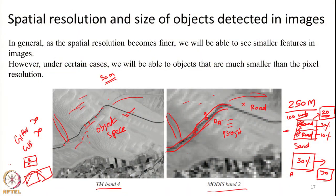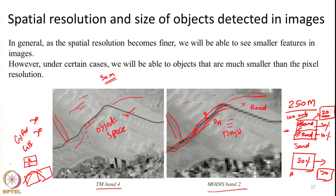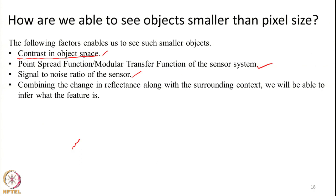In the last lecture we discussed how objects smaller in size than the pixel size or the GIFOV are detected in one particular pixel. We noted that the factors enabling us to see objects smaller than the GIFOV are: the contrast in the object space, the point spread function and the modulation transfer function of the sensor, the signal-to-noise ratio of the sensor, and the spatial context in which the feature is located.